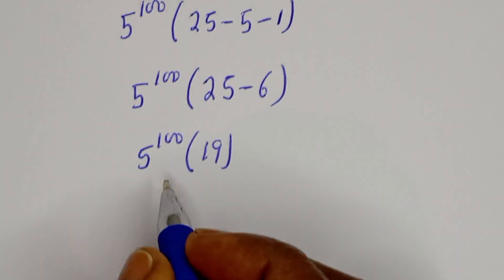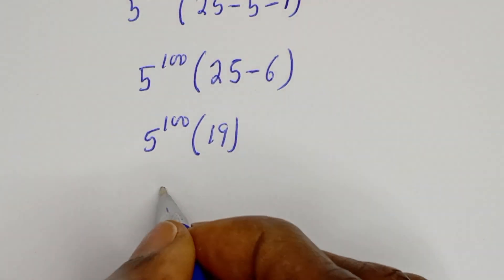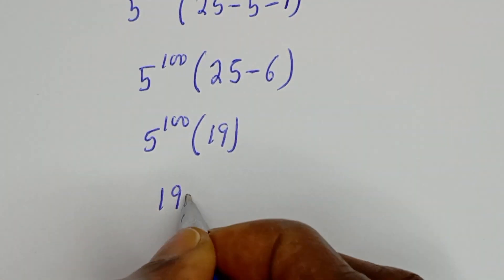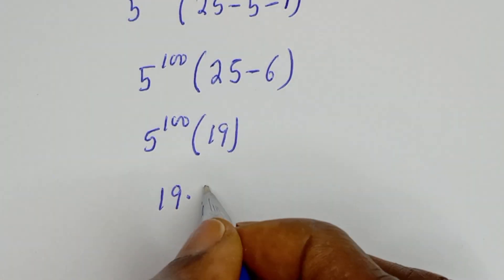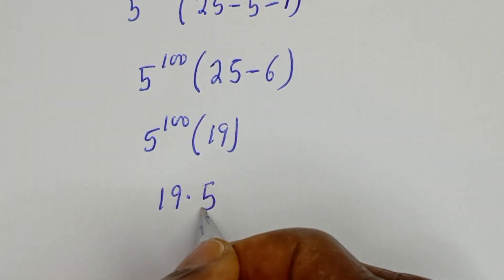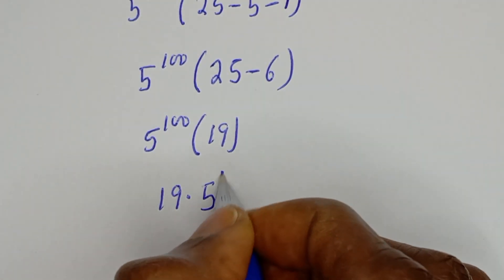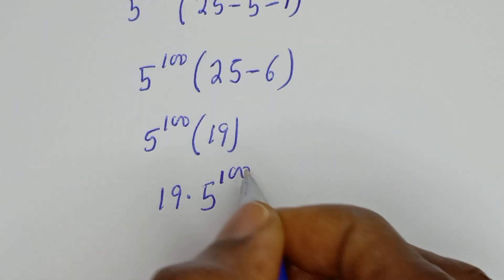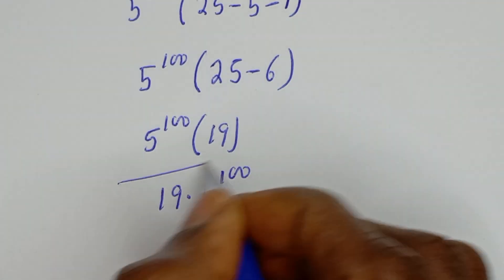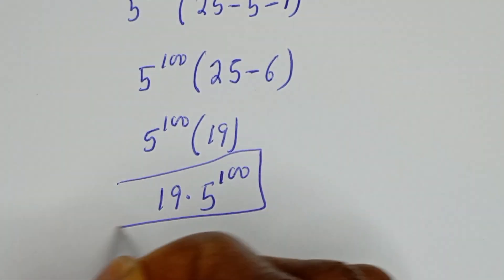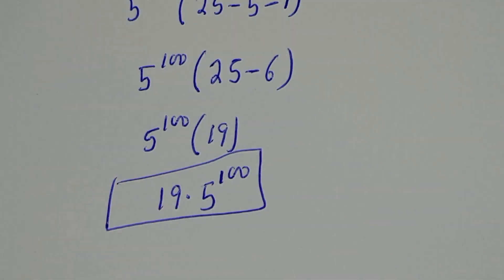Therefore, our final answer is 19 multiplied by 5 to the power of 100. This is the final answer.